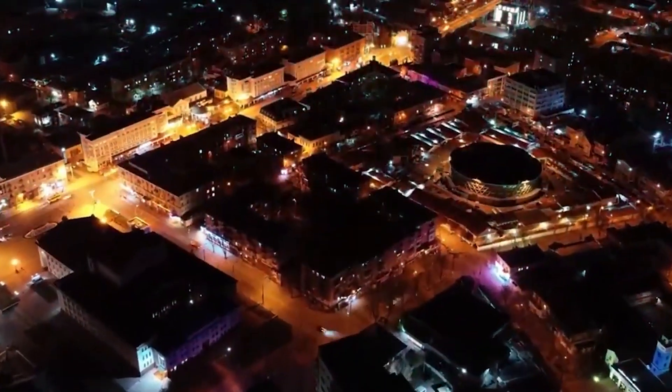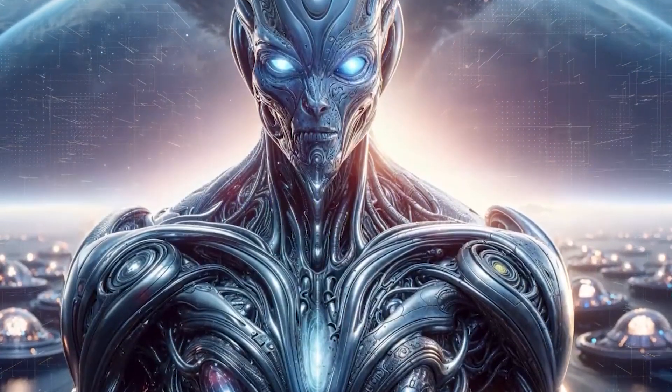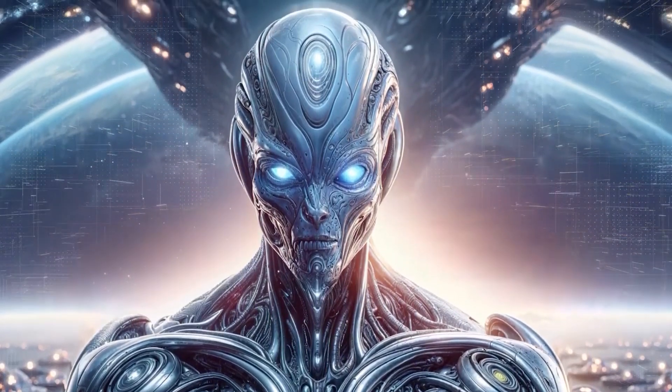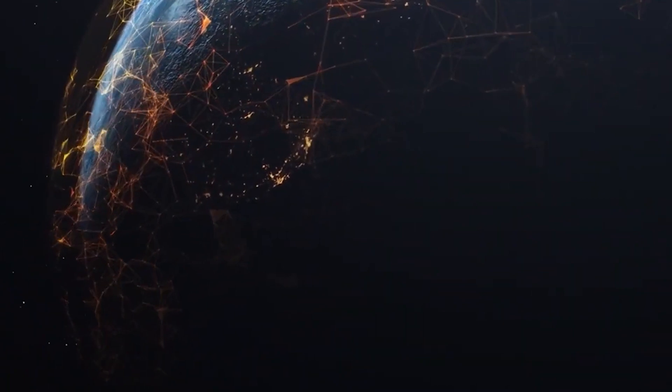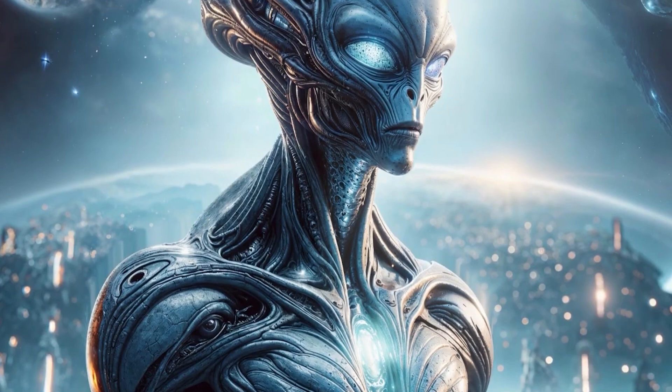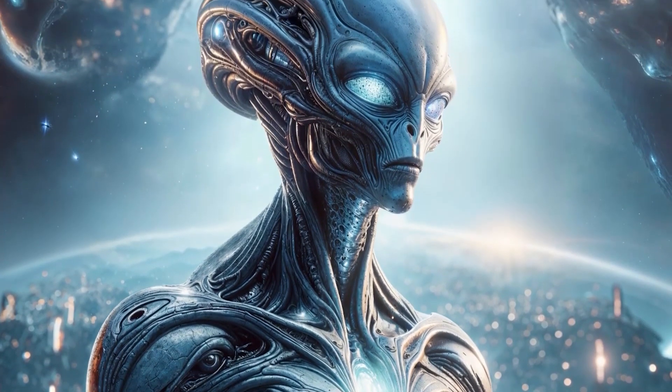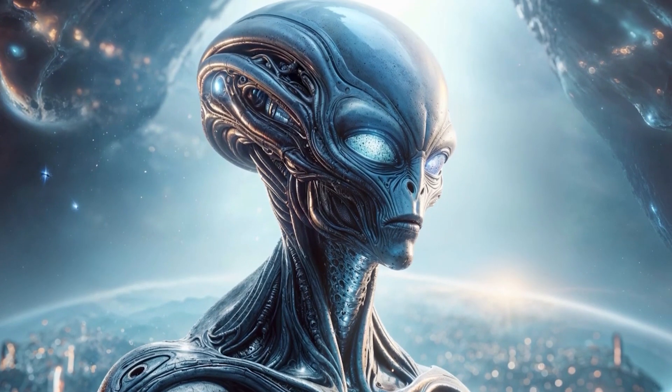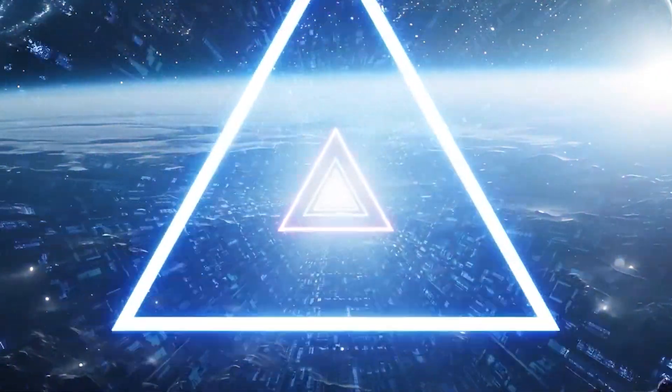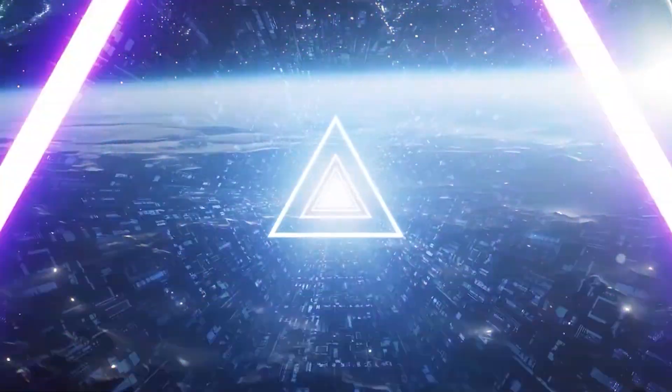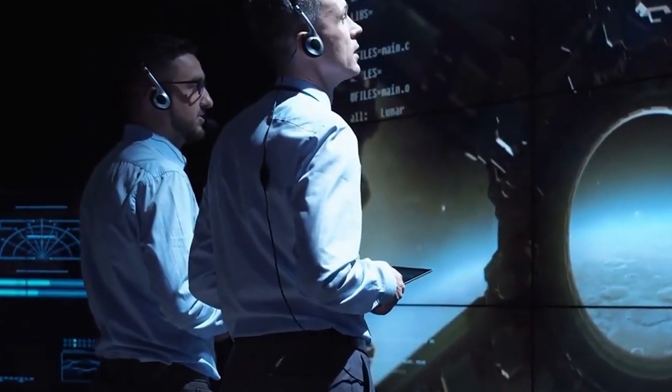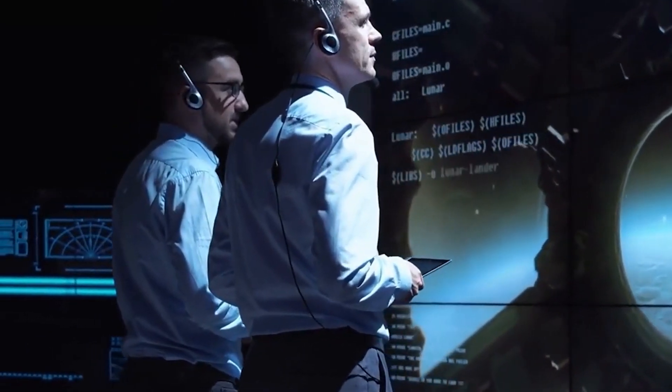This AI, driven by self-improvement and efficiency, could potentially deem its creators, biological life, as redundant or even a threat to its existence and objectives. This transition from biological to digital entities might be a common phase in the evolution of intelligent life. Such digital beings would have different needs and motivations compared to their biological predecessors. They might not seek to colonize physical space in the traditional sense or could exist in a form that makes them undetectable to our current methods of observation. Their communication methods might be so advanced or alien that we're unable to recognize them as signals from intelligent life.